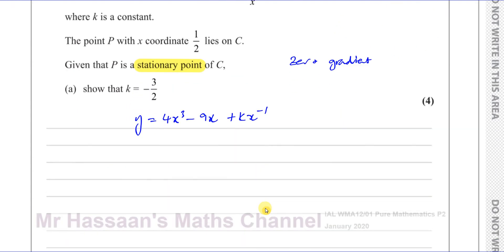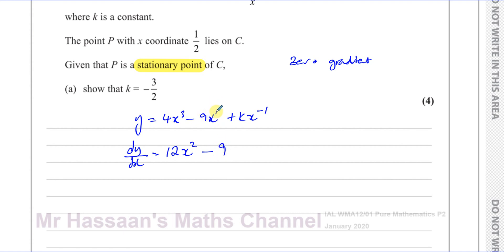We differentiate this equation by differentiating both sides with respect to x. This side becomes dy/dx. For 4x cubed, you multiply by the power — so 3 times 4 is 12 — and take 1 from the power, giving 12x squared. For minus 9x, you multiply by the power of 1, giving minus 9. For k times x to the minus 1, you multiply by minus 1 to get minus k, and subtract 1 from the power, giving x to the minus 2. So dy/dx equals 12x squared minus 9 minus kx to the power of minus 2.